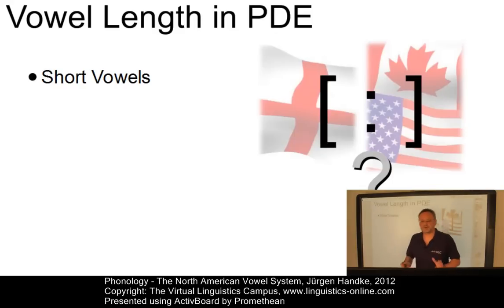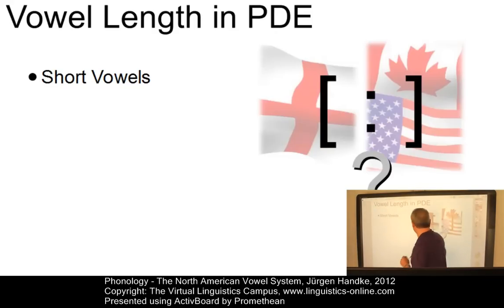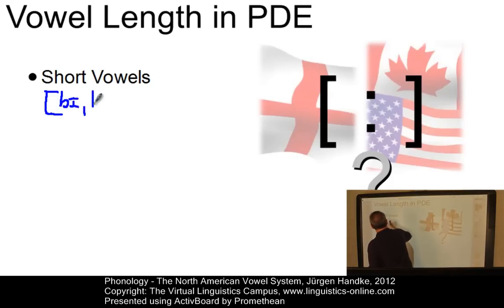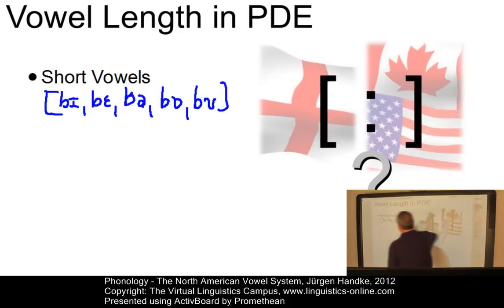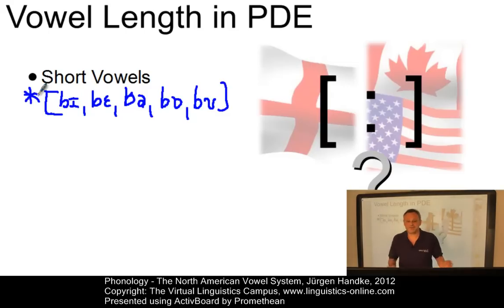English short vowels cannot occur word-finally in stressed position, so there are no words of the form B, B, B in present-day English — none of these exist. And indeed, there are very few counter-examples to this principle.